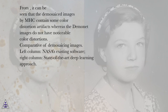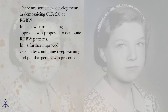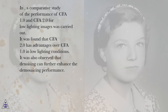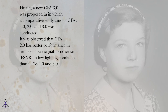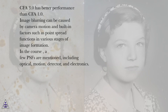There are new developments in demosaicing CFA-2.0 or RGBW. A new pan-sharpening approach was proposed to demosaic RGBW patterns, and a further improved version combining deep learning and pan-sharpening was also proposed. A comparative study of CFA-1.0 and CFA-2.0 for low lighting images found that CFA-2.0 has advantages over CFA-1.0, and denoising can further enhance demosaicing performance. A new CFA-3.0 was also proposed. CFA-2.0 has better PSNR performance in low lighting than CFA-1.0 and 3.0, while CFA-3.0 performs better than CFA-1.0.